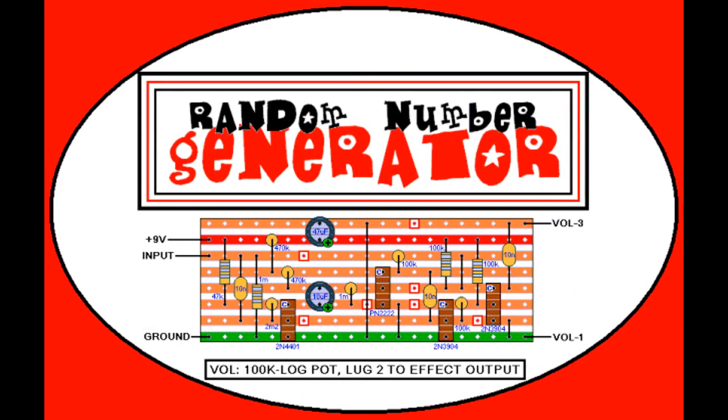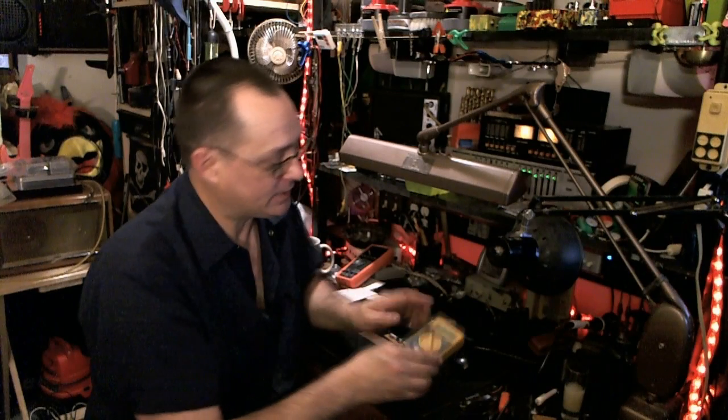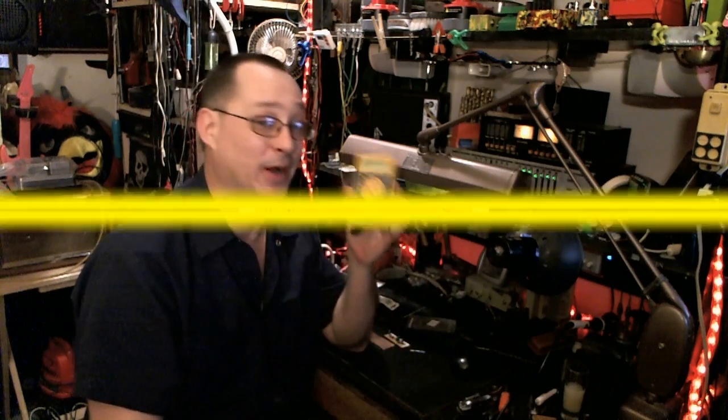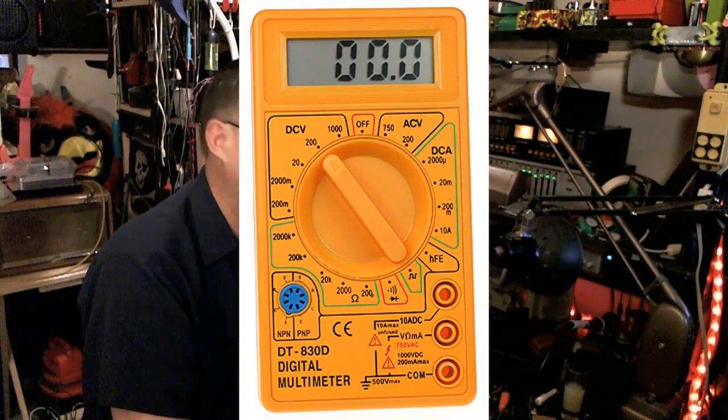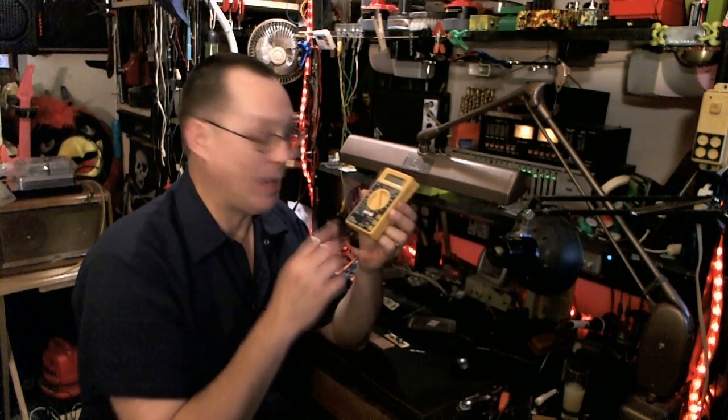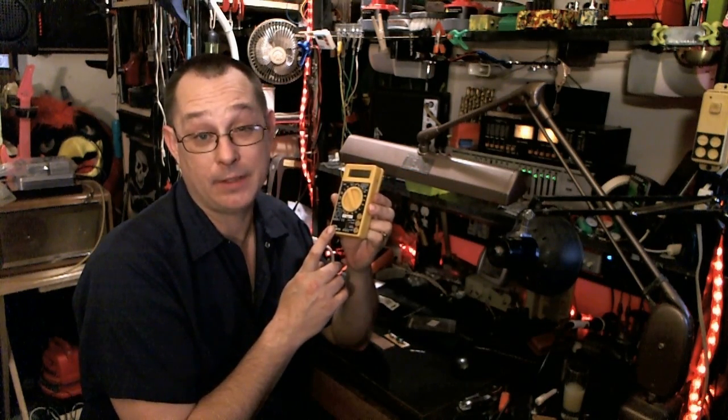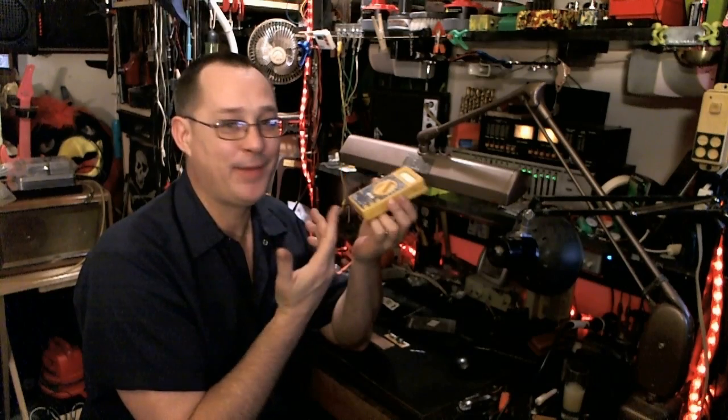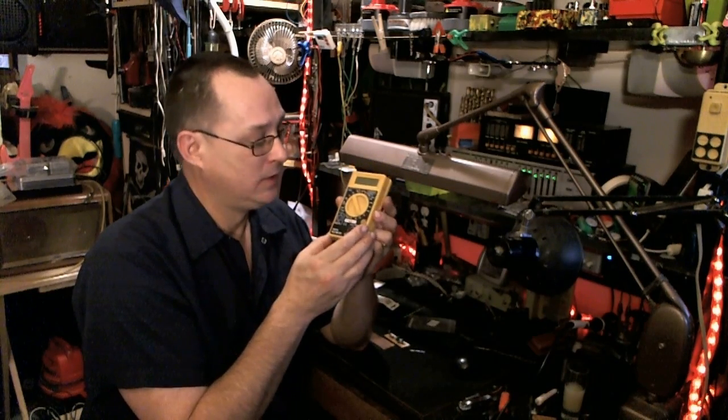So I was at Menards, and I had a little bit of extra money to spend. It turns out these things, you can get these for as cheap as $3 as what I recently read on the Internet. I had a little bit of extra money that day, and I knew that I didn't have the HFE test on my meter. So I saw this thing, and I was like, man, I'm going to get it. It's only $7.